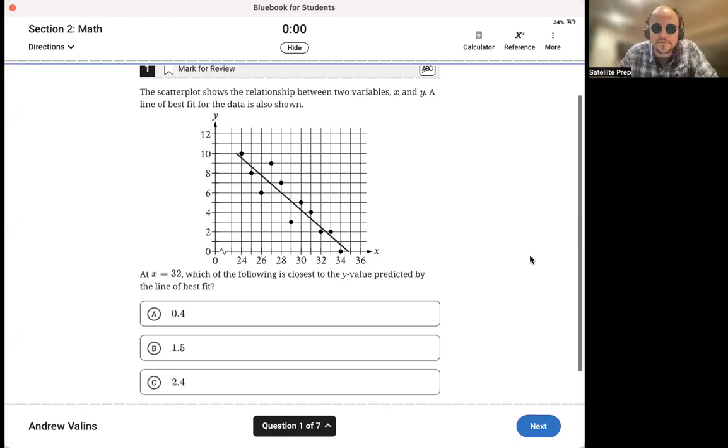So here's the first math question on the second module. It says the scatter plot shows the relationship between two variables, X and Y. A line of best fit for the data is also shown. So there it is, in all of its glory, the line of best fit.